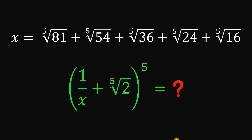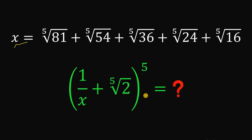Can you solve this math challenge? Here's the question. Given the value of x as p-th root of 81 plus p-th root of 54 plus p-th root of 36 plus p-th root of 24 plus p-th root of 16, the goal is to evaluate the expression 1 over x plus p-th root of 2, raised to the power of 5.